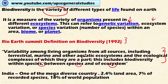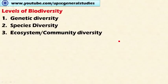India is one of the mega biodiverse countries because of its species richness and rich biodiversity. Even though India accounts for only 2.4 percent of the land area, it accounts for 7 percent of the recorded species of plants and animals on the earth, and it is home to 18 percent of the world's population. So India is a mega diverse country.